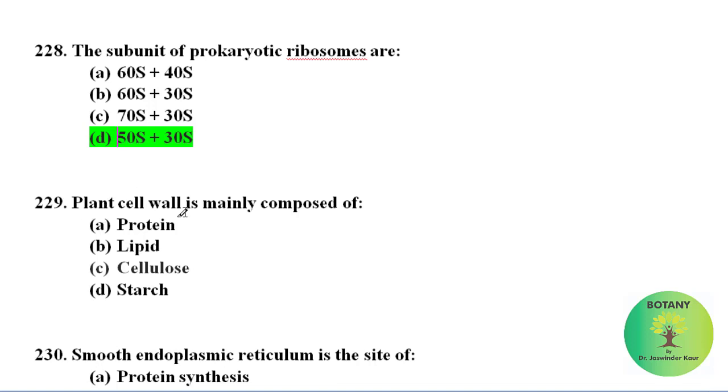Plant cell wall is mainly composed of cellulose.